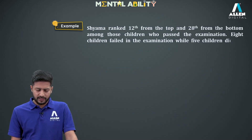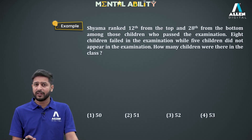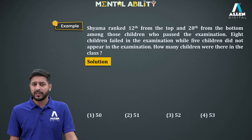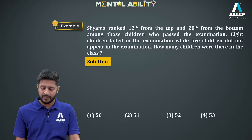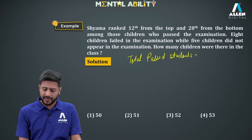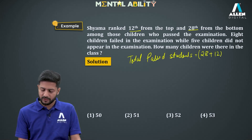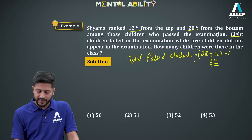Example 4: Shama ranked 12th from the top and 28th from the bottom among children who passed the examination. First, we find the total number of students who passed: Total passed = 28 + 12 − 1 = 39. So 39 students passed the examination.